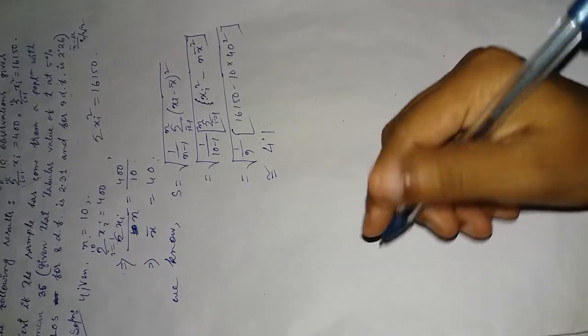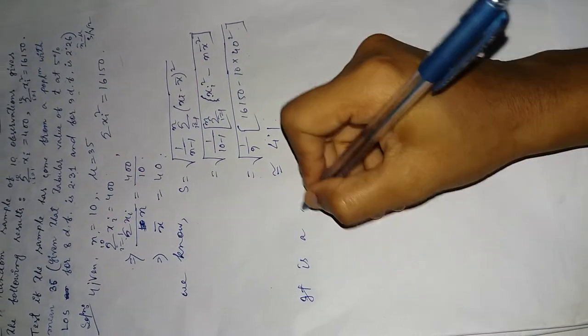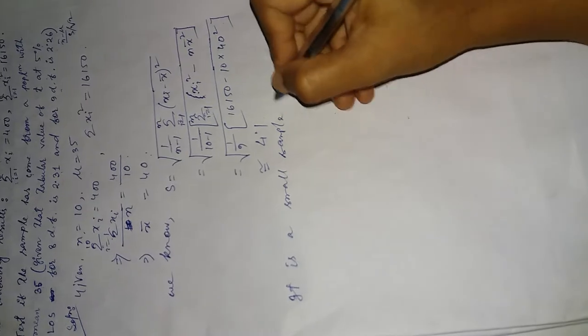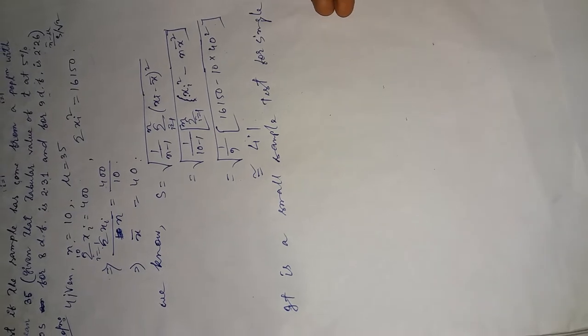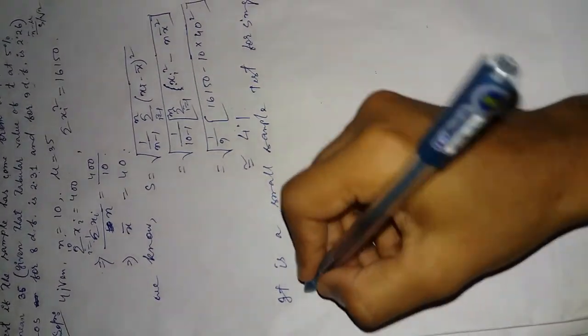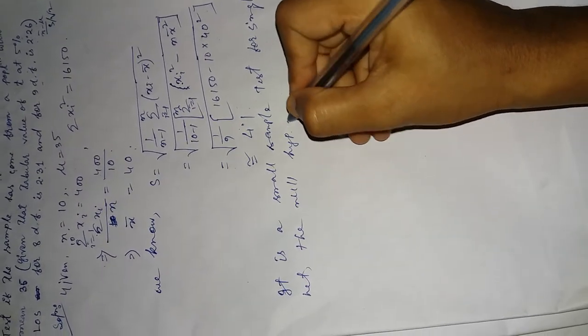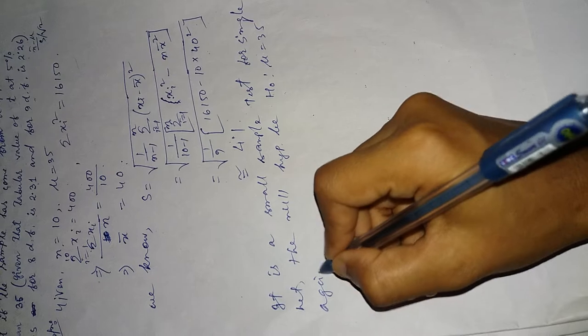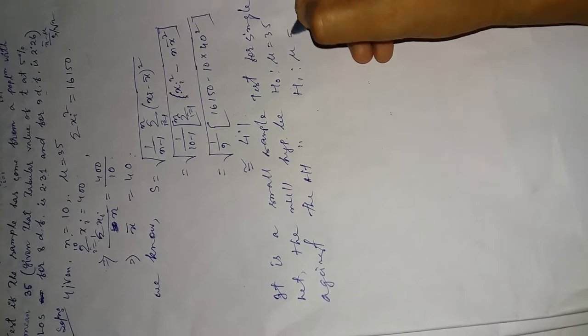Now write the statement. Mu is given, mu is equal to 35. It is a small sample test for single mean. Let the null hypothesis H naught be mu is equal to 35, against the alternative hypothesis H1, mu not equal to 35.